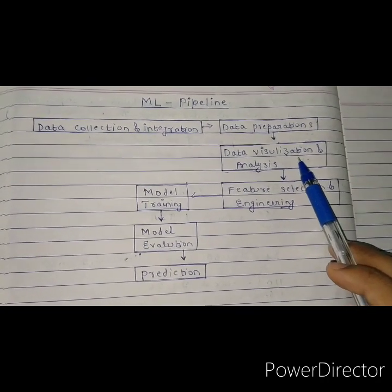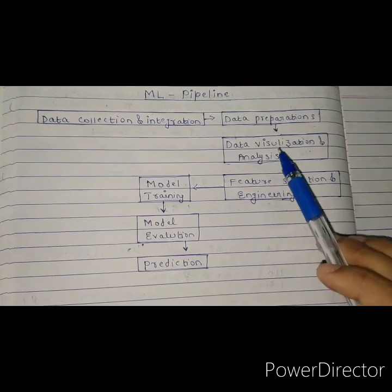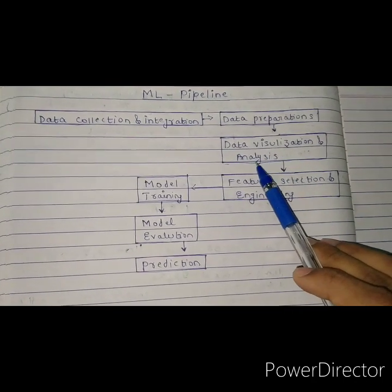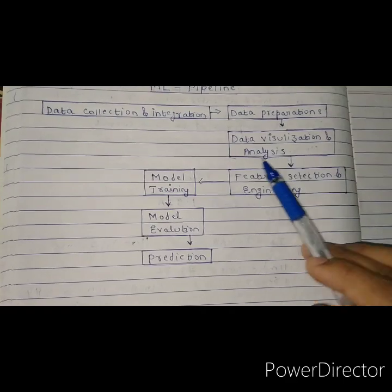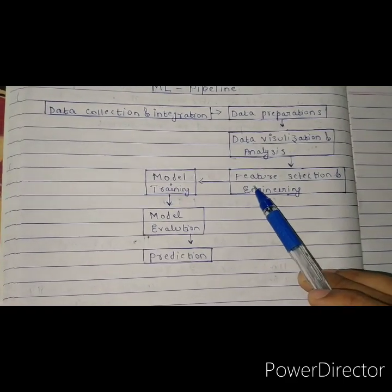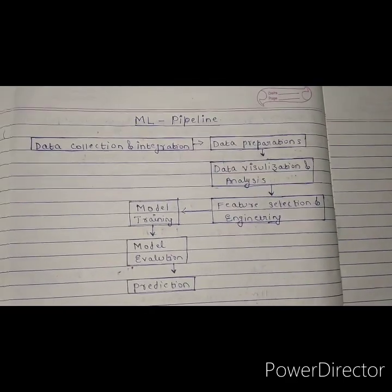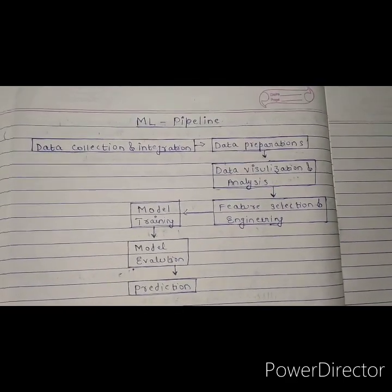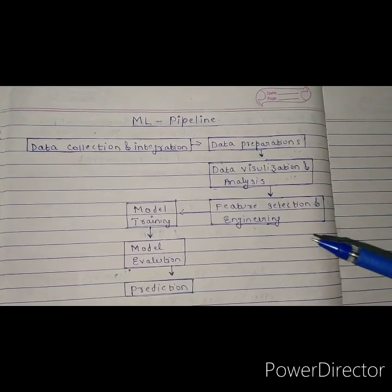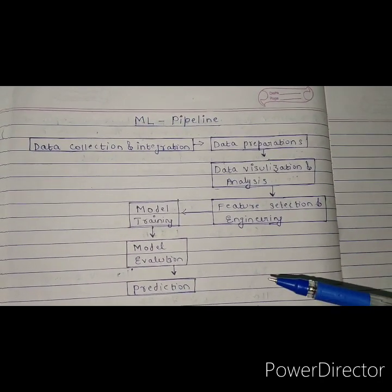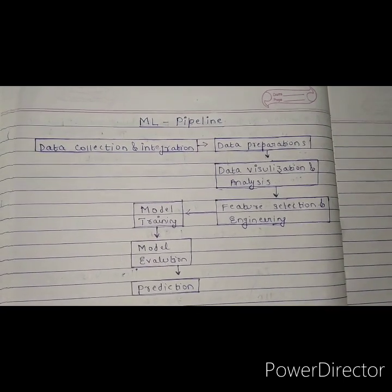The fourth step is feature selection and engineering. You always need to analyze your data, and you have to use your own engineering skills to finalize the features of the machine learning problem.